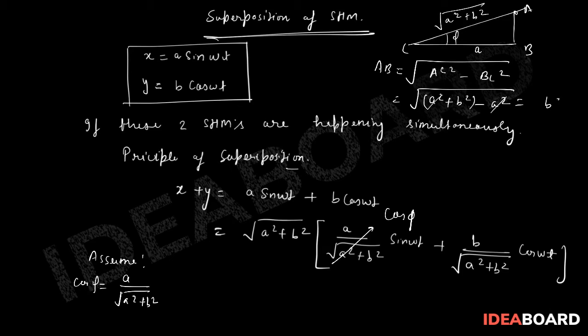This A square and A square is cancelled out. This will be simply root of B square which is B. That means this side will be simply B only. Now I can also see one more thing here.